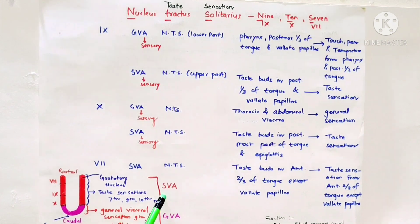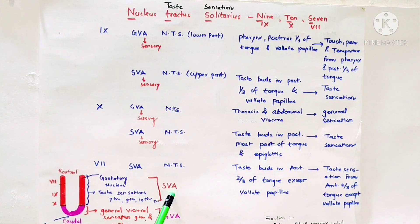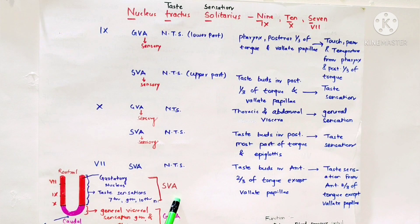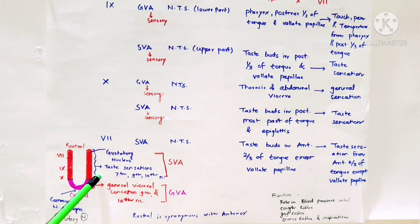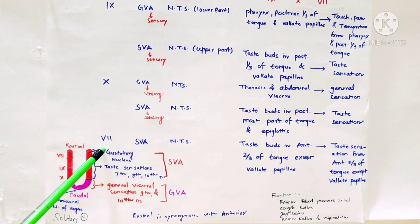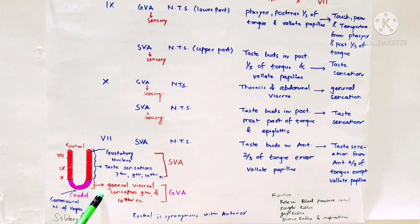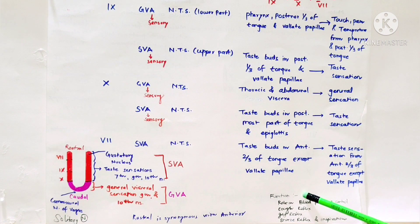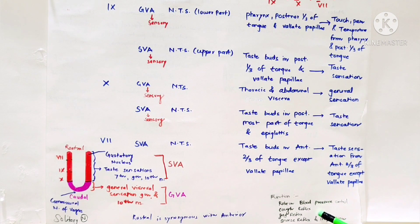Last topic is nucleus tractus solitarius. Nucleus tractus solitarius is a series of purely sensory nuclei forming vertical columns of grey matter embedded in medulla oblongata. Afferent means sensory.